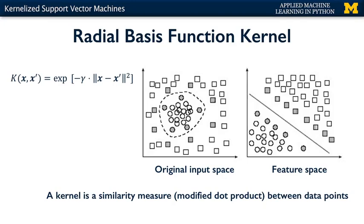The dark circles and squares represent the points that might lie along the maximum margin for a support vector machine in the transformed feature space, and also show the corresponding points in the original input space. So just as we saw with the simple 1D and 2D examples earlier, the kernelized support vector machine tries to find the decision boundary with maximum margin between classes using a linear classifier in the transformed feature space, not the original input space. The linear decision boundary learned in feature space corresponds to a nonlinear decision boundary in the original input space — in this example, an ellipse-like closed region.